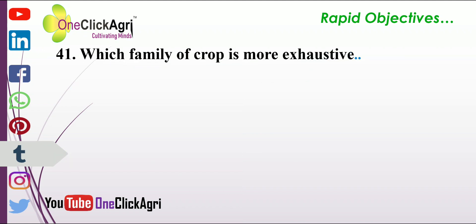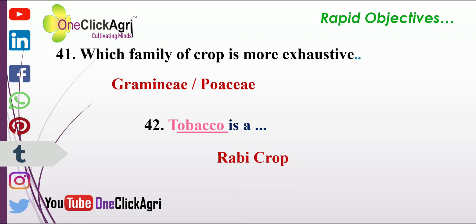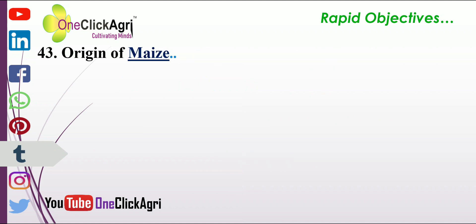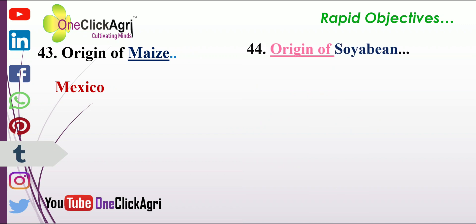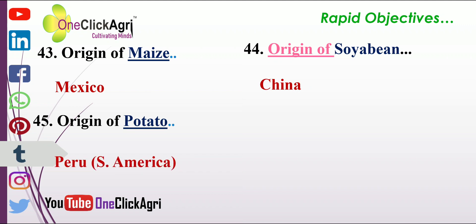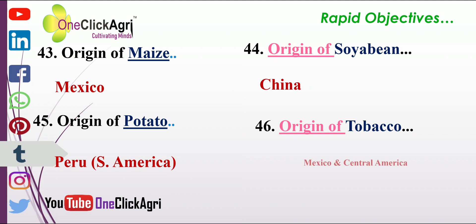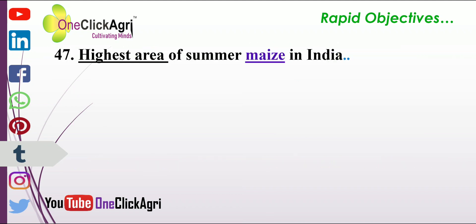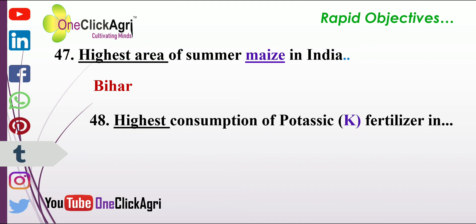The most exhaustive family of crops is Gramineae or Poaceae. Tobacco is a rabi crop. The origin of maize is Mexico. The origin of soybean is China. The origin of potato is Peru, South America. The origin of tobacco is Mexico and Central America. The highest area of summer maize in India is in Bihar. The highest consumption of potassium fertilizer in India is in Maharashtra.